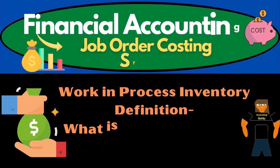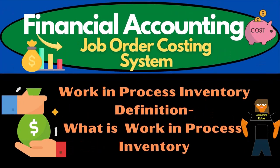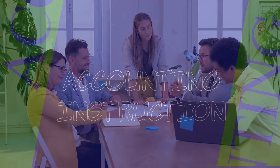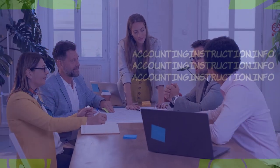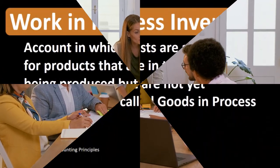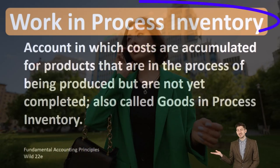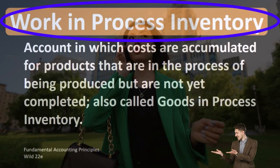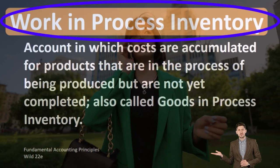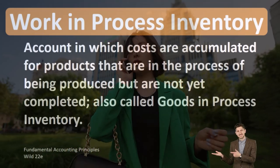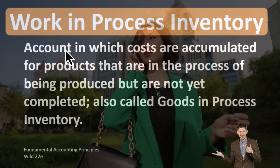Hello, in this lecture we will define work in process inventory. According to Fundamental Accounting Principles, WILD 22nd edition, the definition of work in process inventory is an account in which costs are accumulated for products that are in the process of being produced but are not yet completed, also called cost of goods in process inventory.